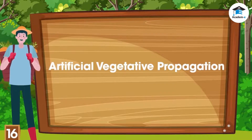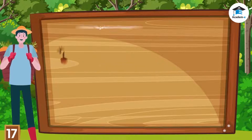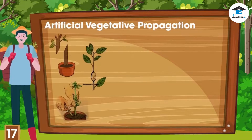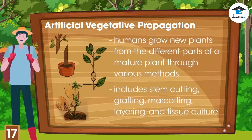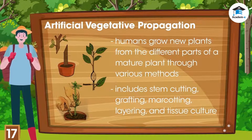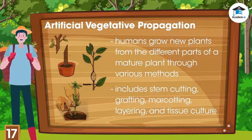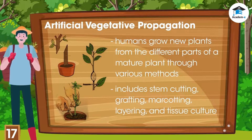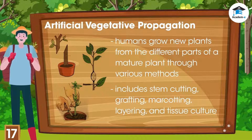Artificial vegetative propagation is the process in which humans grow new plants from the different parts of a mature plant through various methods. The most common artificial vegetative propagation methods are stem cutting, grafting, marcotting, layering, and tissue culture.